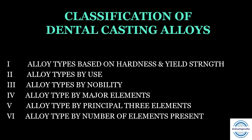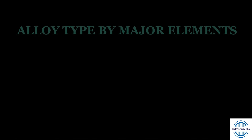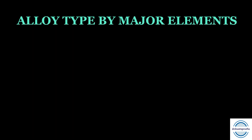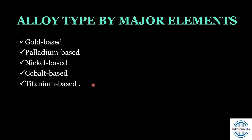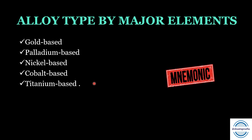The fourth classification is alloy types by major elements present in the alloy. There are five categories: gold-based, palladium-based, nickel-based, cobalt-based, and titanium-based. You can remember these with the mnemonic 'Government Projects of National Capital Territory' — G for gold, P for palladium, N for nickel, C for cobalt, and T for titanium.